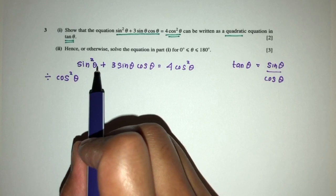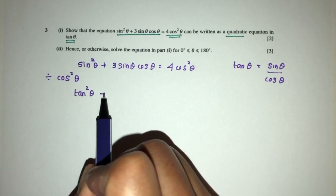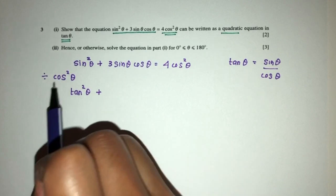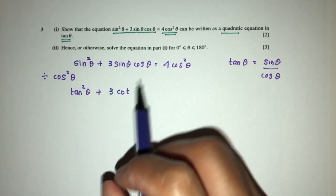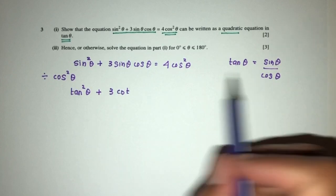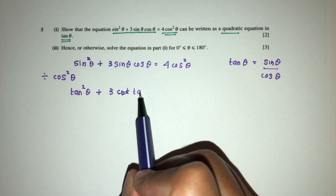So here you will have sin²θ over cos²θ, that will be tan²θ. Here you will have this over this, will be 3 cot—sorry, cos is going to go away, so it's going to be sine over—sorry, it's tan, not cot, tan θ.